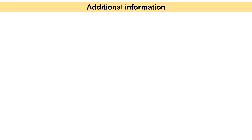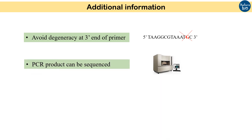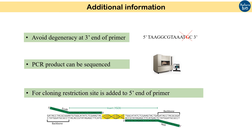For a degenerate primer to work efficiently, avoid designing primers having degeneracy at the three prime end. To determine the actual sequence of the gene in our organism, sequencing of the amplified product may be done. If the purpose is cloning of a gene, often restriction sites in the form of additional bases at the five prime end of the primer are added.